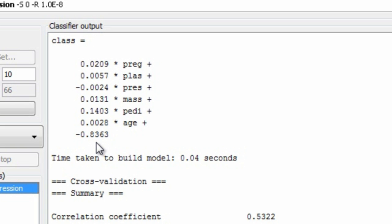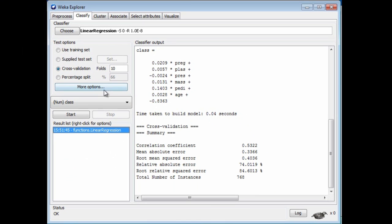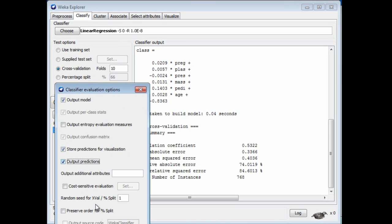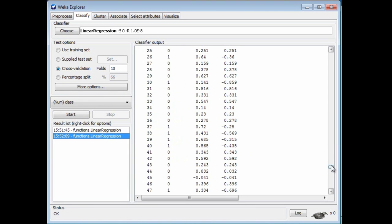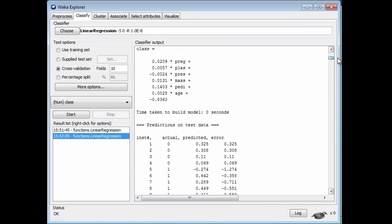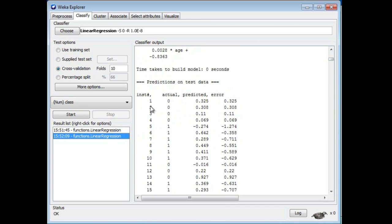That will give us a number for any given instance. We can see that number if we select Output Predictions and run it again. Here's a table of predictions for each instance in the data set. This is the instance number. This is the actual class of the instance, which is 0 or 1. This is the predicted class, which is a number, sometimes it's less than 0. We would hope that these numbers are generally fairly small for 0s and generally larger for 1s.